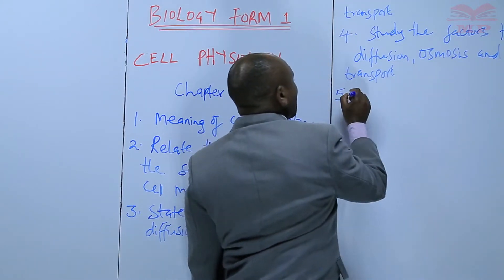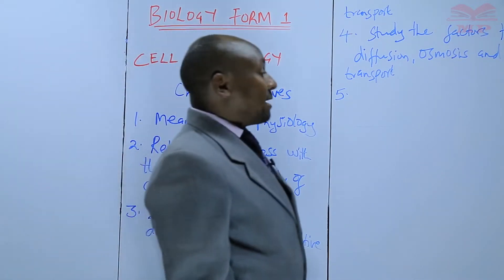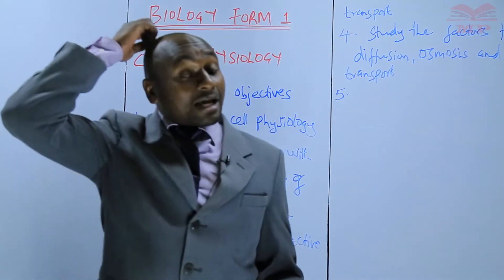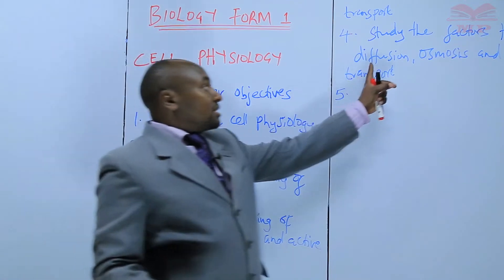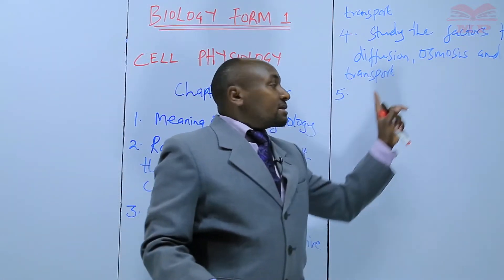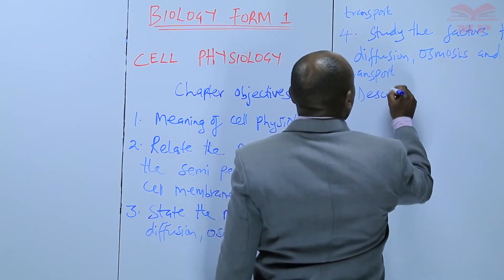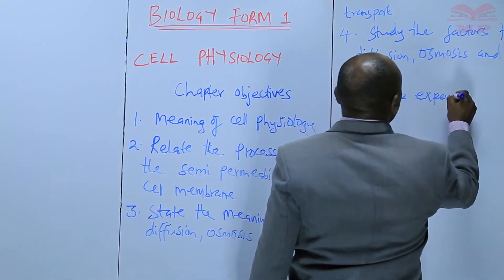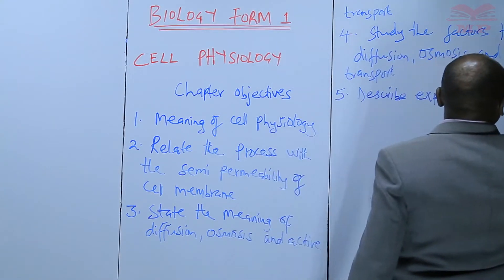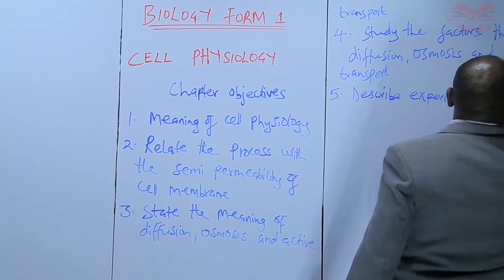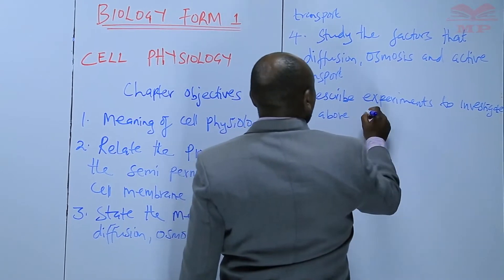Then we go to objective number five. We should also be in a position by the end of the topic to describe some of the experiments that one can carry out to investigate diffusion, osmosis, and active transport. So we should be able to describe experiments to investigate the above processes.